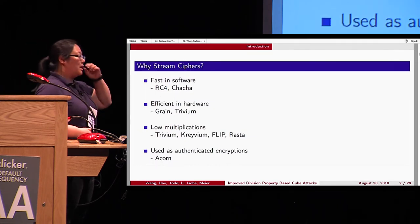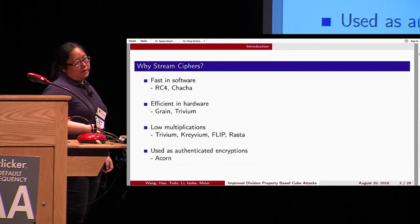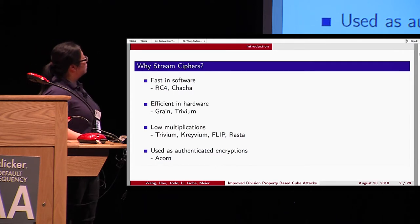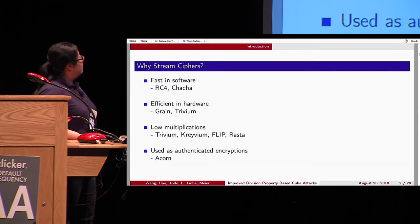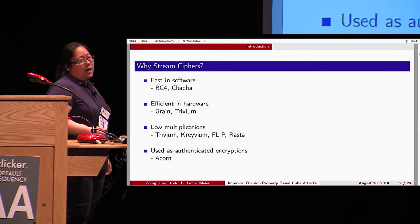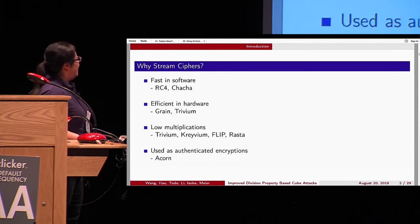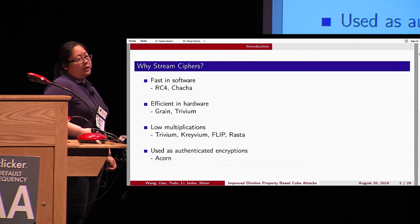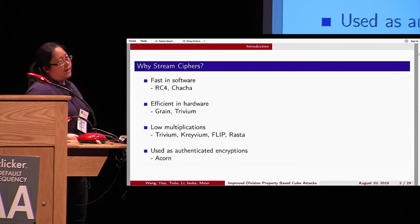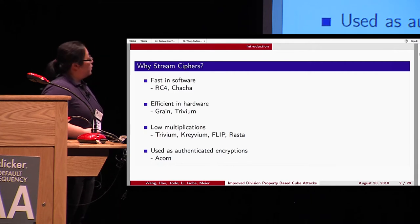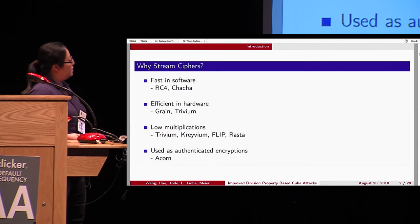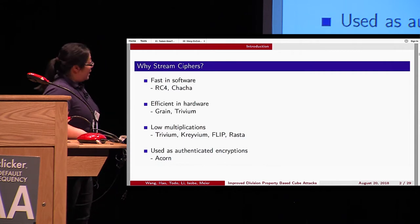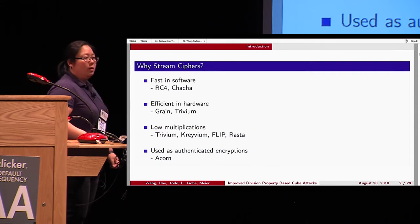Why stream ciphers? As one of the symmetric key primitives, stream ciphers are still widely used. For example, RC4 and ChaCha are used in software applications where higher throughput is required, and Grain and Trivium are designed particularly suitable for hardware applications. Also, some ciphers with low multiplications — for example, Trivium, Carivium, Flip, and Rasta — play a very good role in homomorphic encryption. Rasta is another paper accepted by Crypto and will be talked about Wednesday morning.